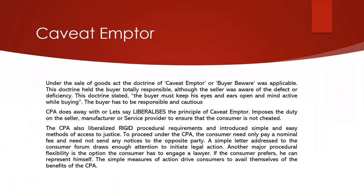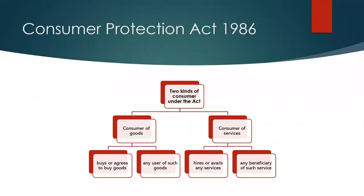There are two kinds of consumers under the act: consumer of goods and consumer of services. A consumer of goods is one who buys or agrees to buy goods, or any user of such goods. A consumer of services is one who hires or avails any service or is a beneficiary of that service. This is covered under Section 2(1)(d) of the Consumer Protection Act 1986 and Section 2(7) of the 2019 Act.